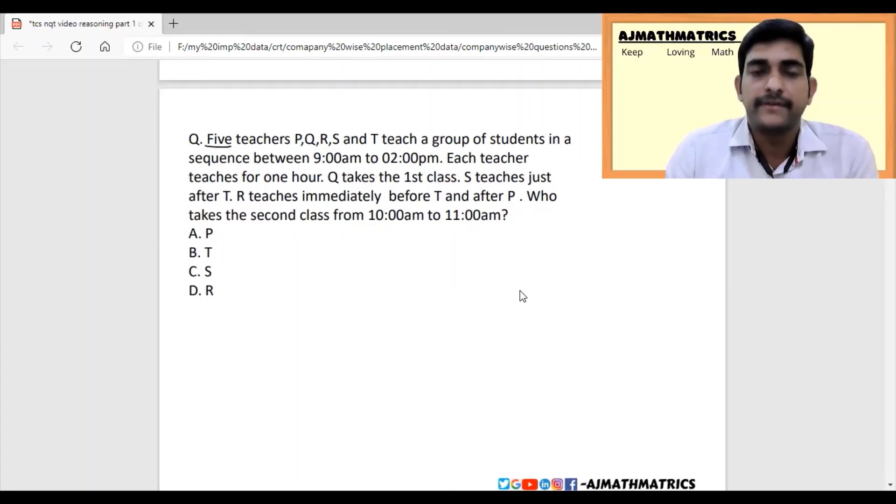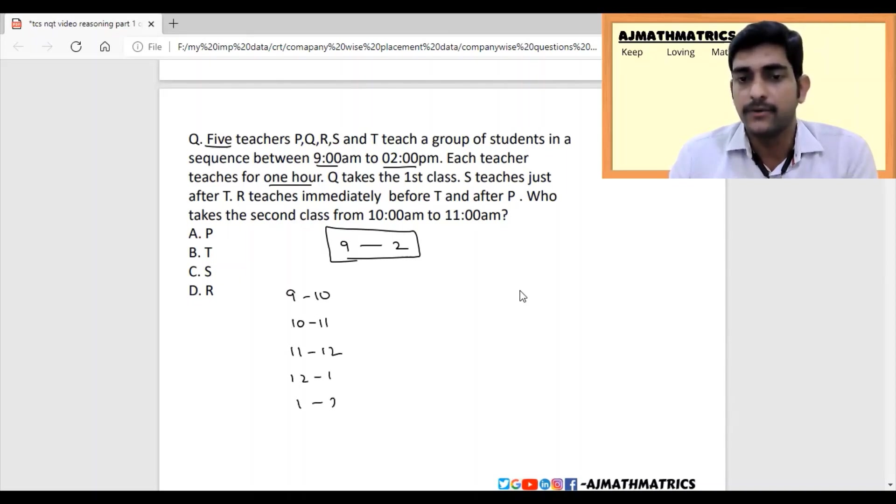Five teachers P, Q, R, S, T teach a group of students from 9 am to 2 pm. Each teacher teaches for one hour: 9 to 10, 10 to 11, 11 to 12, 12 to 1, and 1 to 2. Q takes the first class, which means 9 to 10 Q takes the class. S teaches after T, so S can be at the last position. T should not come at the very end because there's no teacher after.